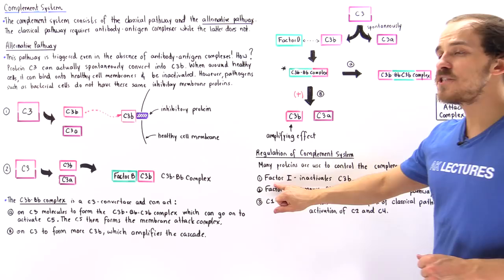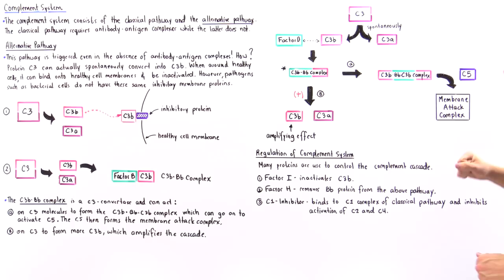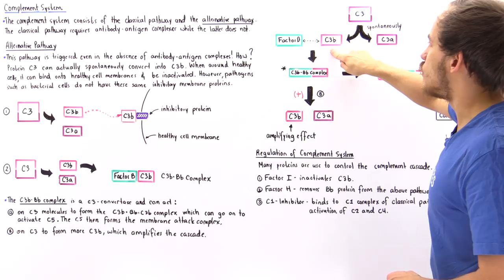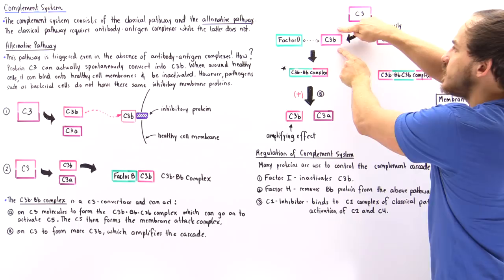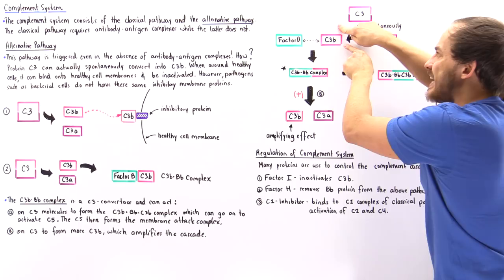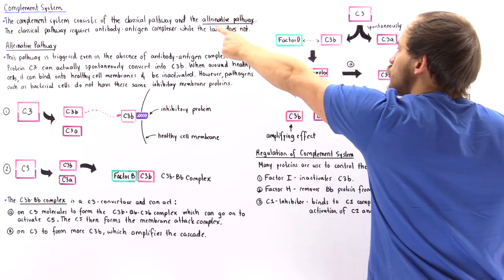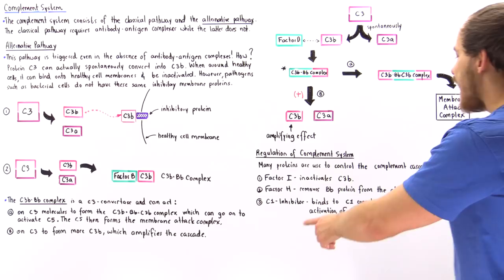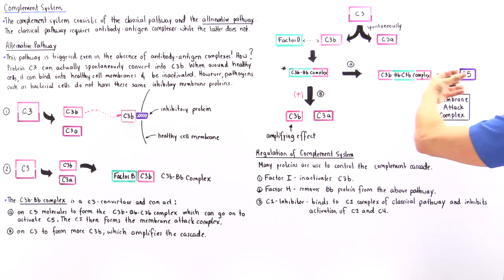Three proteins commonly used by the body to regulate and deactivate some of these agents are the following. Let's begin with factor I. Factor I is a protein that can basically deactivate the C3b molecule, so C3b cannot combine with factor B and cannot follow the alternative pathway. Another protein is factor H, and factor H actually removes the Bb protein from the C3b-Bb complex, once again deactivating this pathway.